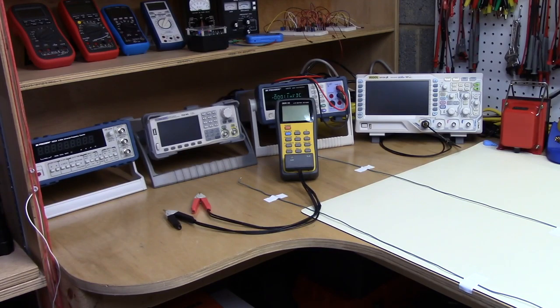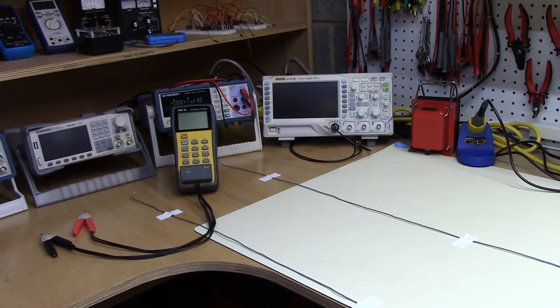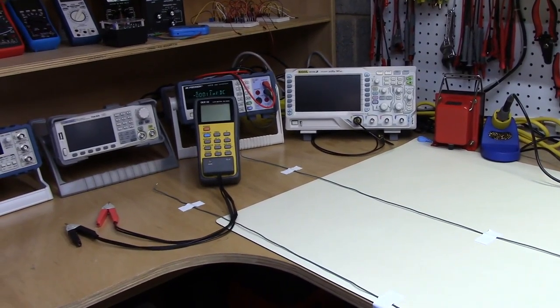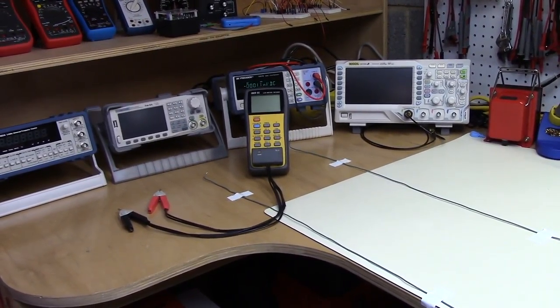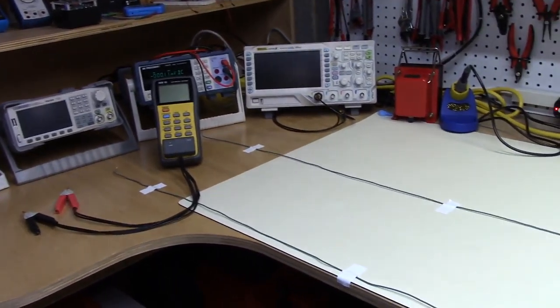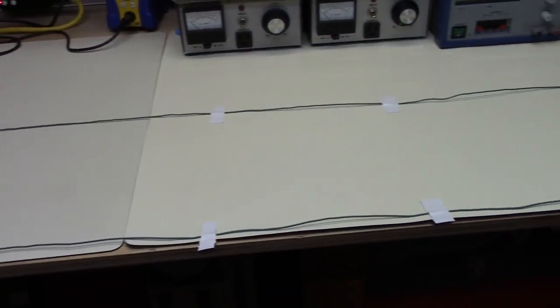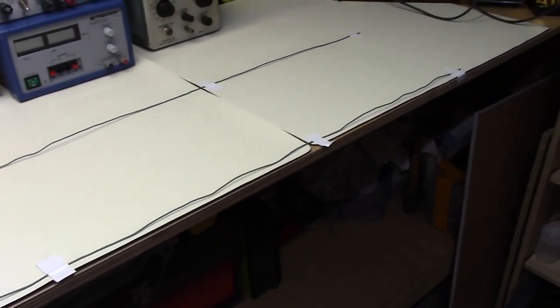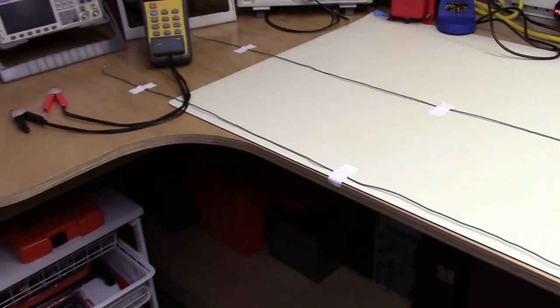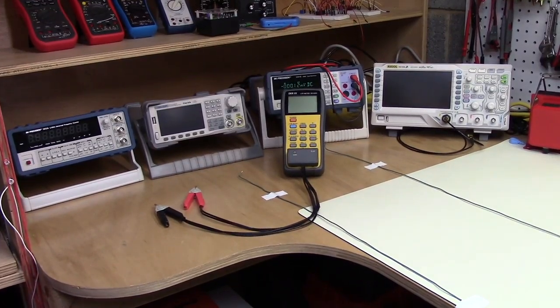In this video, we're going to measure a situation where we have two pieces of number 18 AWG wire, two meters long and laid parallel to one another. I've got these two pieces of wire taped up on the bench. They don't look terribly parallel and they're not exactly parallel, but I think it will make the point.